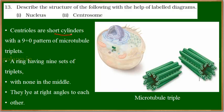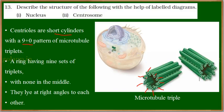A centriole is a short cylinder with a 9 plus 0 pattern of microtubules. If you observe here, you can see there are 9 microtubules — 1, 2, 3, 4, 5, 6, 7, 8, 9 — and at the centre there is nothing. This represents the 9 plus 0 pattern of microtubules, and each microtubule is in the form of a triplet. So 3 microtubules are present in each structure, making the centrioles short cylinders with 9 plus 0 pattern of microtubule triplets.